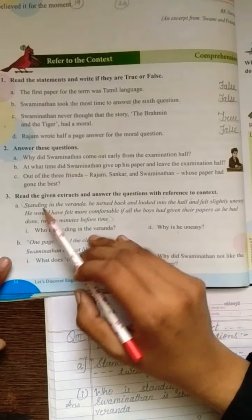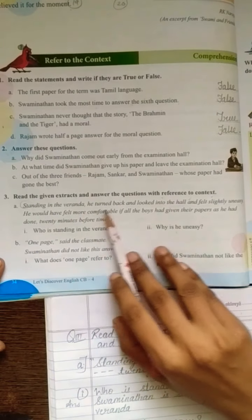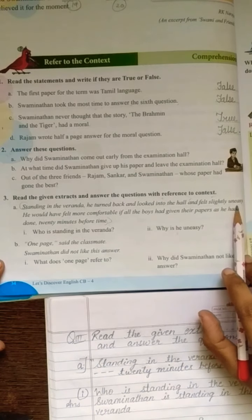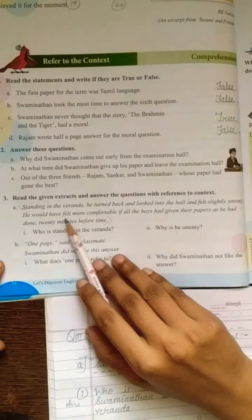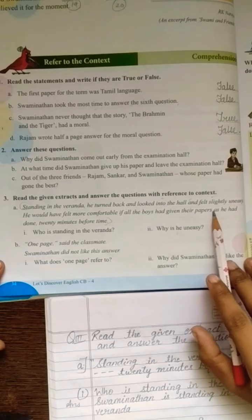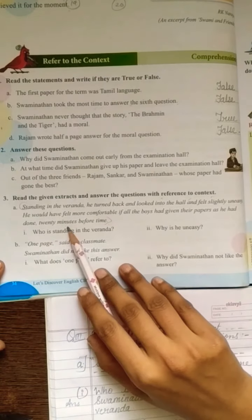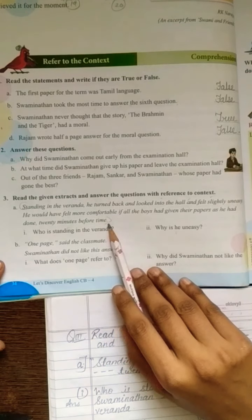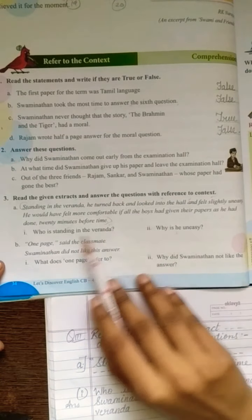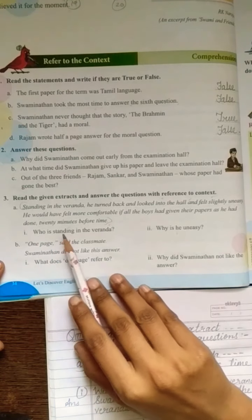Now look at the extract here. Standing in the veranda, he turned back and looked into the hall and felt slightly uneasy. He would have felt more comfortable if all the boys had given their papers as he had done 20 minutes before time. So students, this is your extract, this is your context.